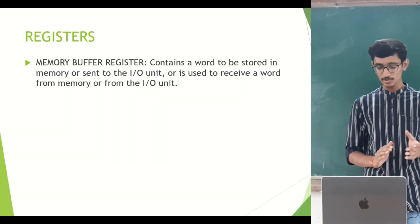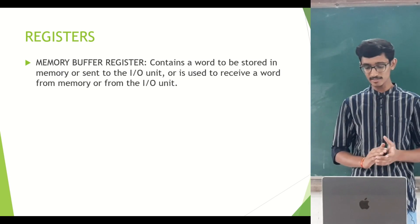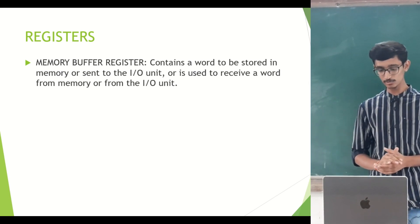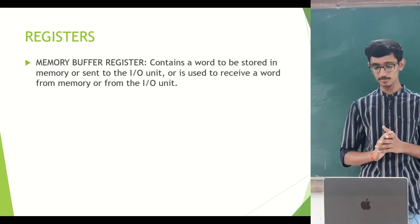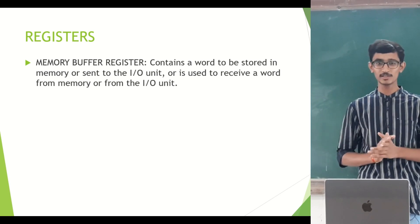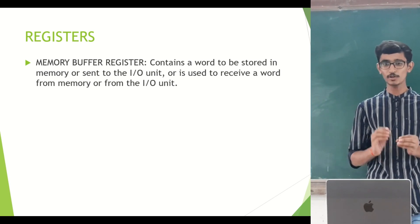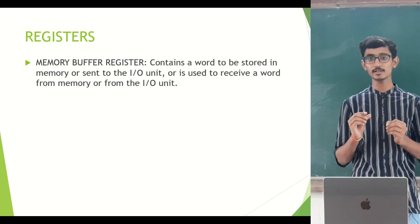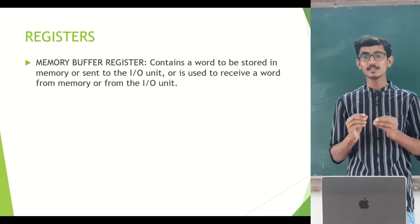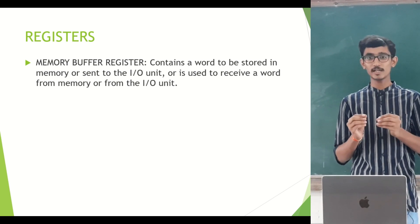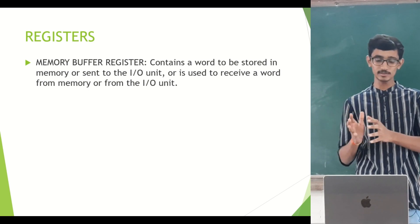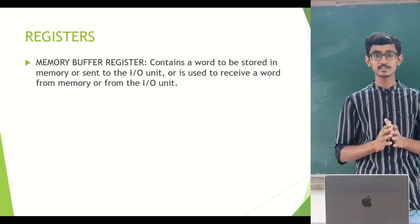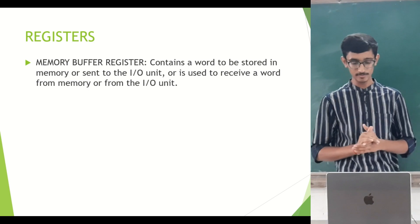The first one is the memory buffer register. It contains a word to be stored in memory or sent to the I/O unit, or is used to receive a word from the memory or from the I/O unit. So basically, if you have to store some data or a word in a pen drive or hard disk, whatever the data is, it is stored in this memory buffer register first. This is the main function of the memory buffer register.